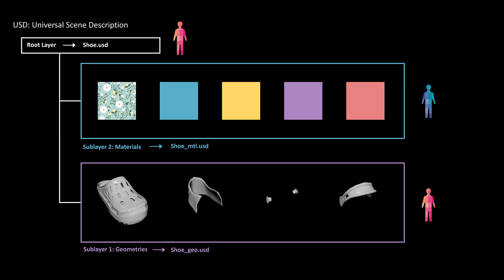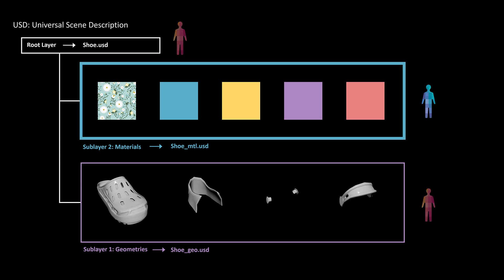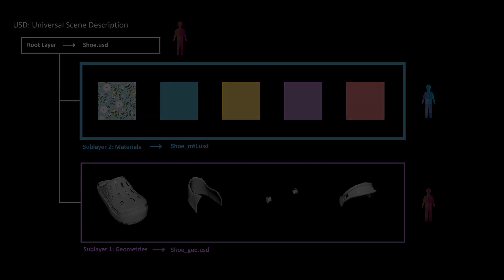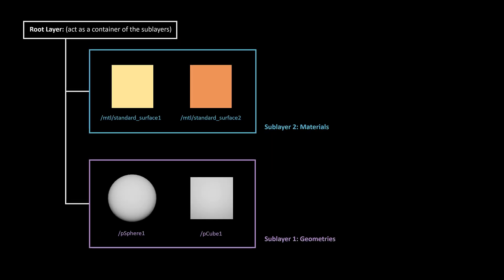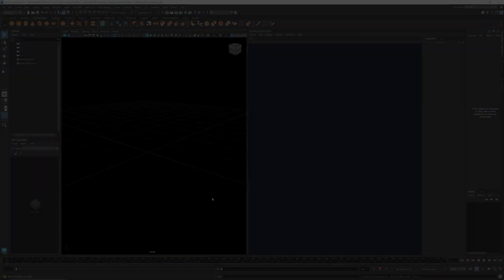As we just learned, for texture artists, the material sub-layer is where they create and modify materials, and it should be set as the target layer when working with LookDevX. In the first example, I'll show you how to create a simple USD stage with a root layer and two sub-layers. The geometry sub-layer will contain a sphere and a cube, and the material sub-layer will have two surface materials. And I'll show you how to assign materials to the geometries.